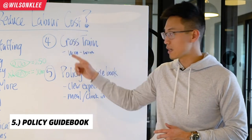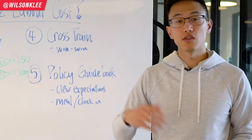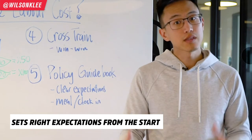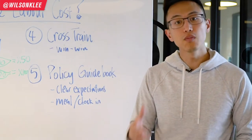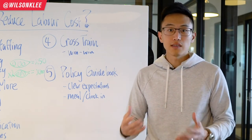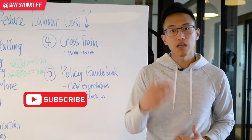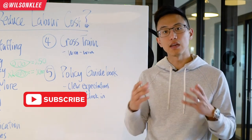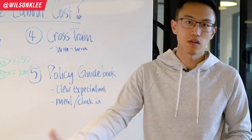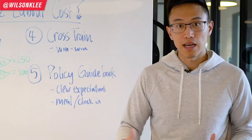The fifth and final way to reduce your labor costs is to have a policy guidebook. A lot of restaurant owners feel frustrated dealing with staff who don't seem to understand expectations. That's because they don't have a policy guidebook that sets the right expectations from the get-go. When onboarding new staff, you identify how you want them to act and the expectations set out for them. For example, at 720 Sweets, we give staff one free ice cream per shift — not two, not three, but one — clearly set from the start, signed in the policy handbook.